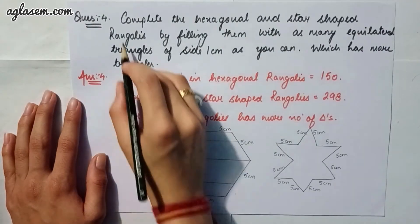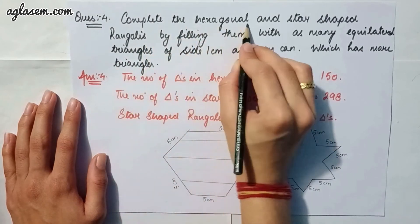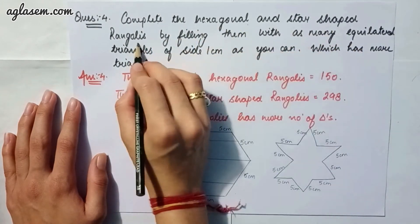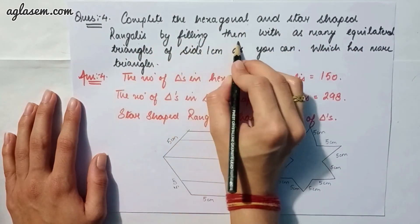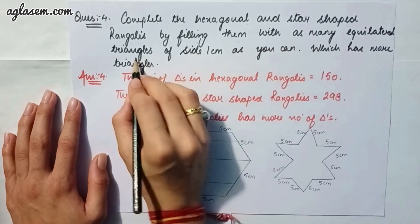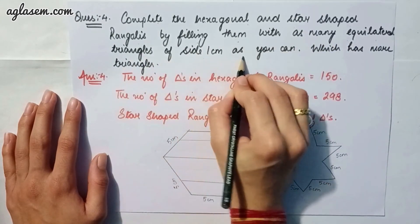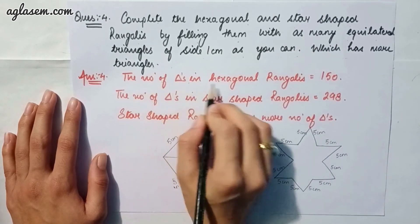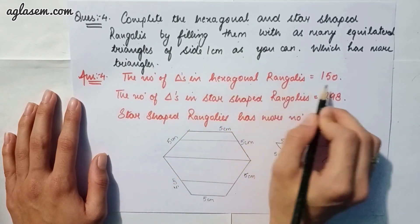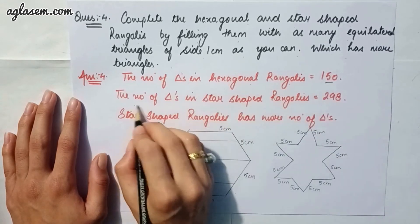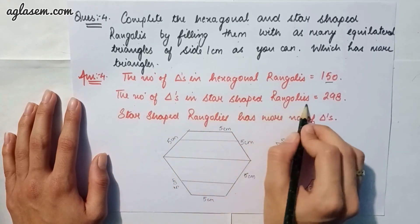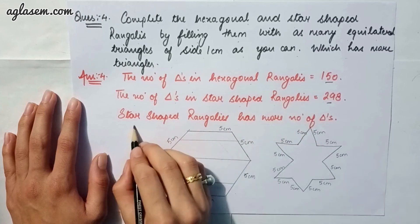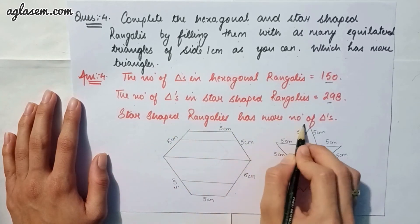Moving to our fourth and last question of this exercise. Complete the hexagonal and star shaped rangolis by filling them with as many equilateral triangles of side one centimeter as you can. Which has more triangles? The number of triangles in hexagonal rangolis is 150 and the number of triangles in star shaped rangolis is 298. So star shaped rangolis has more number of triangles.